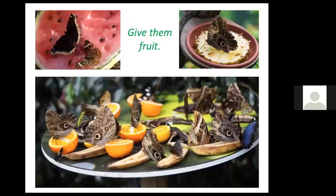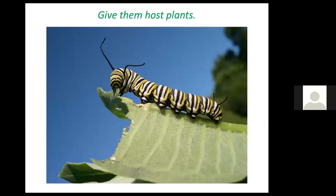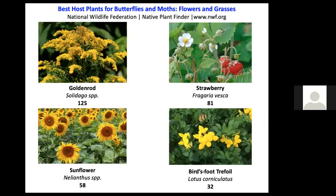Butterflies also enjoy eating fruit and don't seem to care if it's starting to rot — it might be fun to put out a tray of fruit and see what happens. Host plants are absolutely essential for butterflies. The four most popular host plants are goldenrod, host for 125 different species; strawberry, 81 species; sunflower, host to 58; and birdsfoot trefoil, 32. Many other plants are also important host plants.